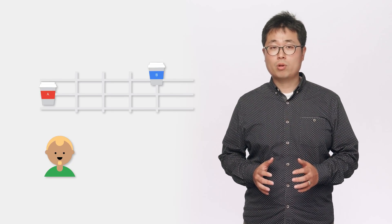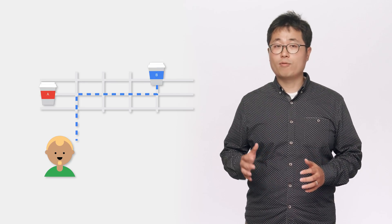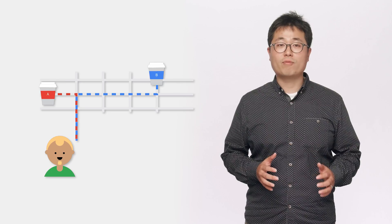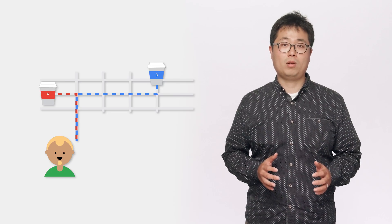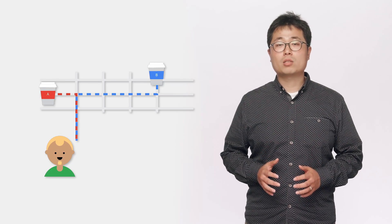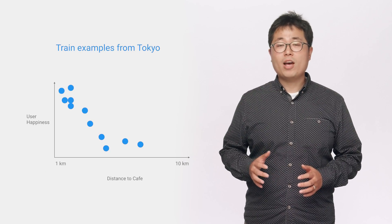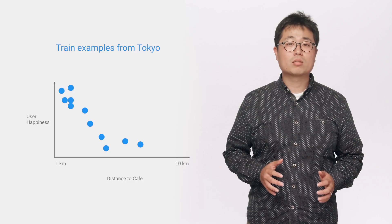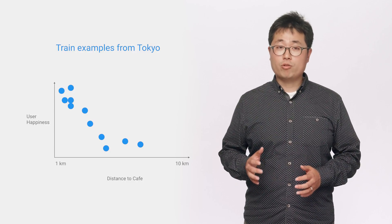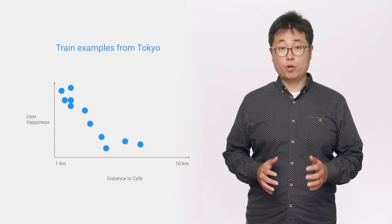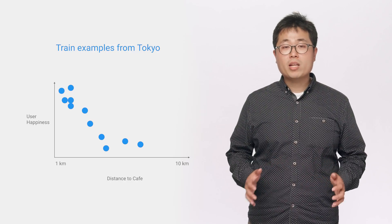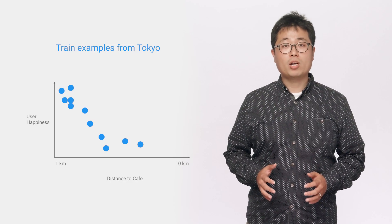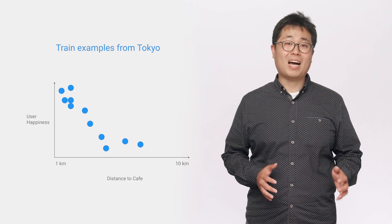Suppose you're designing a model to recommend coffee shops to users. You may want your system to recommend the closest coffee shop if all other characteristics of each coffee shop are exactly the same. This type of prior knowledge is called monotonicity. If we have noisy data, machine learning doesn't always pick up these global trends. For example, say you train your model from Tokyo, where you can walk to many coffee shops, so you don't have much training data for coffee shops a few kilometers out.